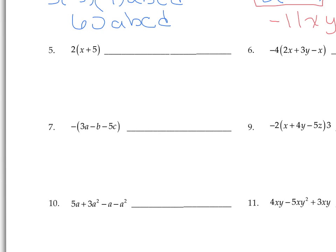Now we notice something different on number 5 — I have add and subtract in the parentheses. Follow order of operations. But since these are not like terms, I can't add them, so this is when I have to use distributive property — when I can't get rid of the parentheses by just adding. So we're going to have 2 times X, then 2 times 5. We get 2X plus 10.